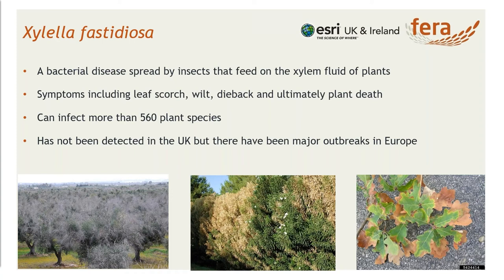Xylella is a bacterial disease that's spread by insects that feed on the xylem fluid within plants. The disease is spread when an insect feeds on an infected plant and moves to a different plant where it spreads the bacterium. That bacterium invades the water transporting vessels of the plant, causing symptoms including leaf scorch, wilt, die back, and can ultimately cause plant death. At the bottom of the slide there are a couple of images — the far right shows some scorch, the middle shows some die back, and on the far left I think that's an olive grove in Italy where it's been completely decimated by Xylella.